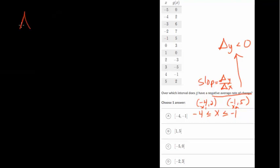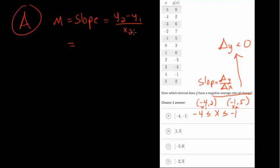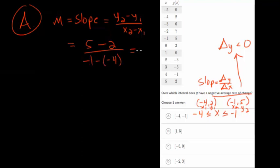Let's plug in for interval A using the slope formula — we use the letter m from y equals mx plus b. We get y2 minus y1 over x2 minus x1: the y value at point 2 is 5 and at point 1 is 2, so we get 5 minus 2 up top, and negative 1 minus negative 4 which becomes plus 4, giving us 3 over 3, so the average rate of change over this interval is just 1 — not negative.